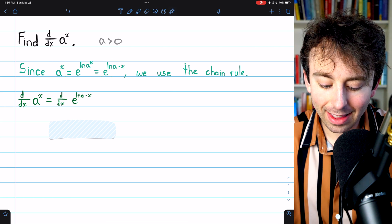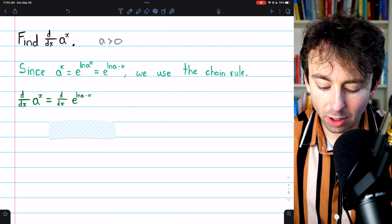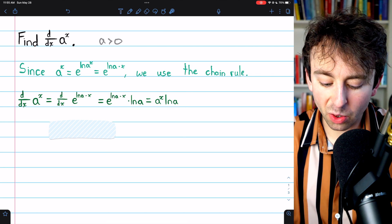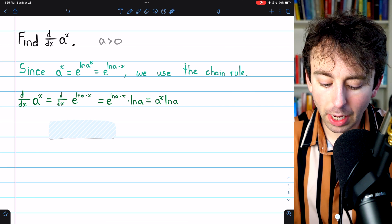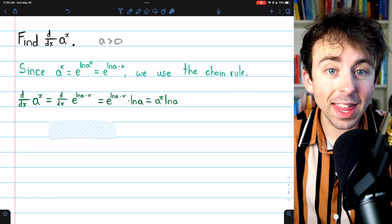Then to take this derivative, we can just use the chain rule. The derivative of e to a thing is just e to that thing. But then we need to multiply by the derivative of that thing.